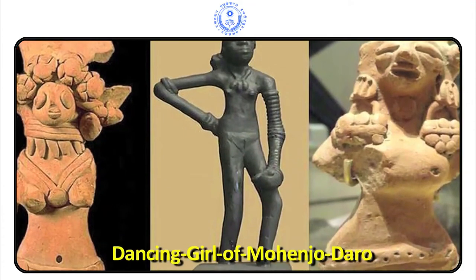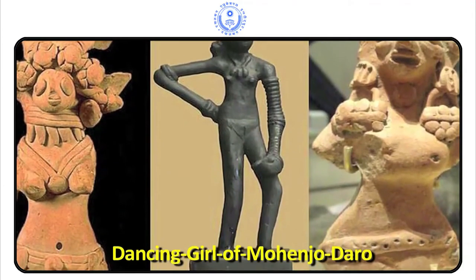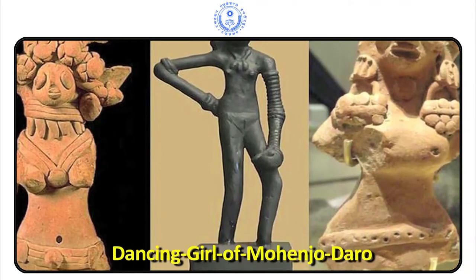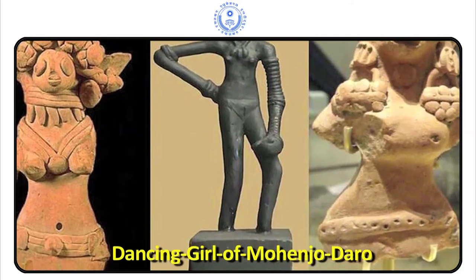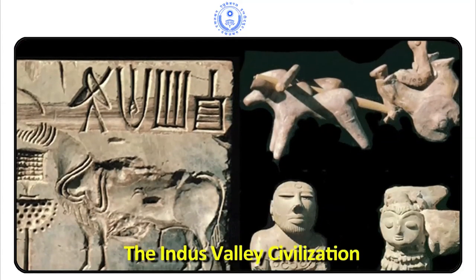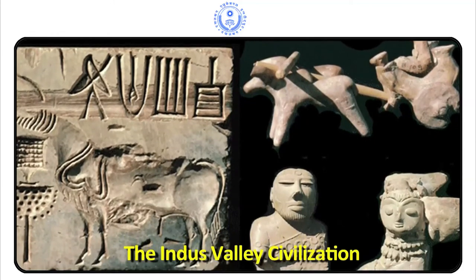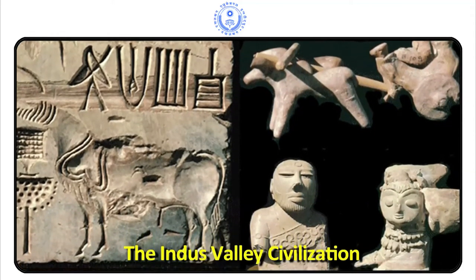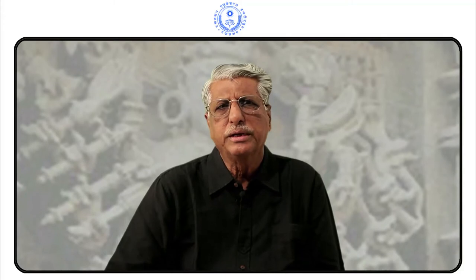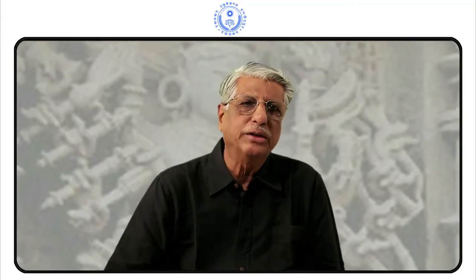The beginning of Indian Sculpture may be traced in Indus Valley Civilization, even though the time lapse between Indus Valley and the next phase of Indian Sculpture — the Mauryan Period — is too huge. Terracotta's cultural tradition can however be traced from post Indus Valley time to Mauryan Period and afterwards. Even though we find traces of a few stone sculptures during Indus Valley, the tradition almost vanishes till the coming of Mauryan Period.